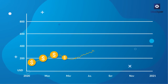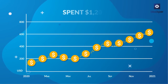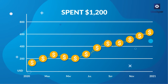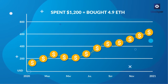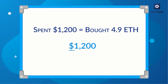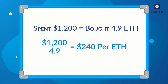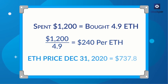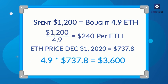Let's say you bought $100 worth of Ethereum every month for a year in 2020. You would have spent $1,200 between January and December and bought over 4.9 ETH with that. If we divide $1,200 by 4.9 ETH, we discover that your average purchase price per Ethereum was $240. By the end of the year, the price of Ethereum was $737.80.